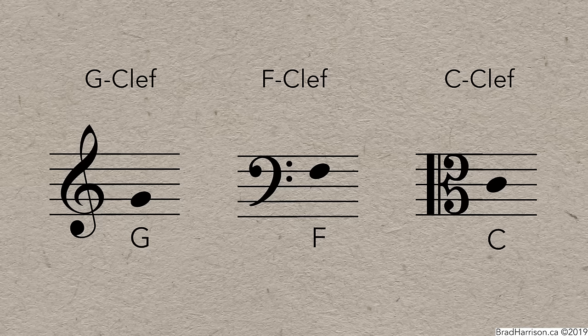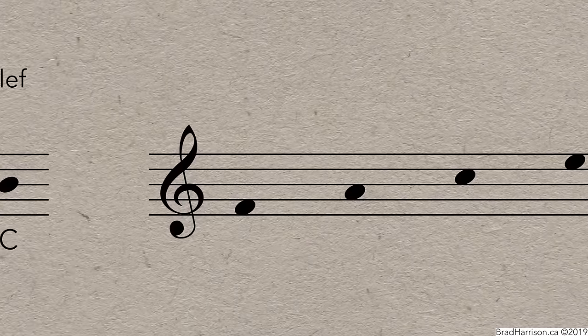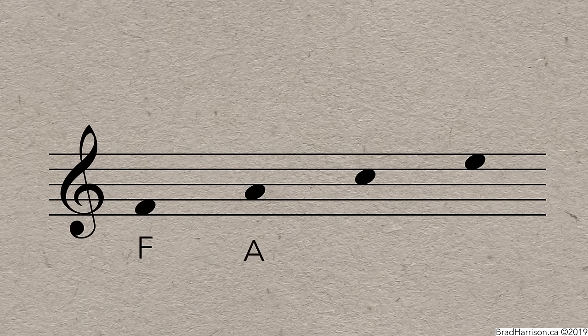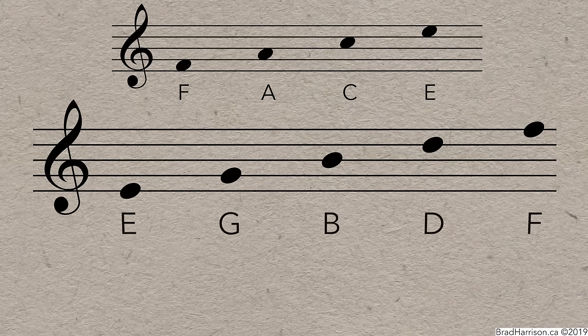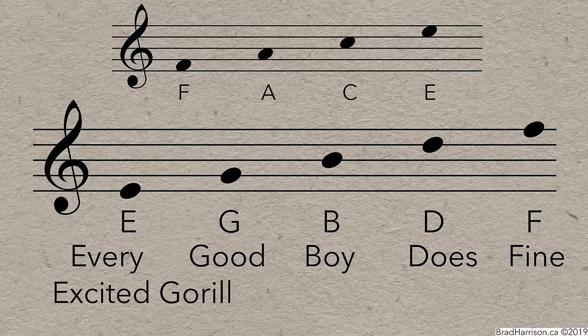The third way is to use a mnemonic device, where the letters of a word or sentence remind you of the letter names of the lines or spaces. The easiest one is the spaces of the treble clef, because they spell out the word face. For the lines, a popular mnemonic is Every good boy does fine. Alternatively, feel free to come up with your own, like Excited gorillas breakdance flawlessly.